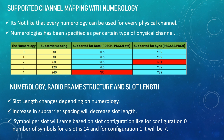Now let's come to the next topic: numerology, radio frame structure, and slot length. The slot length basically depends on the numerology. The main point is: increasing the subcarrier spacing will decrease the slot length. Symbols per slot will remain the same based on slot configuration — for configuration 0, the number of symbols per slot is 14, and for configuration 1 it is 7.